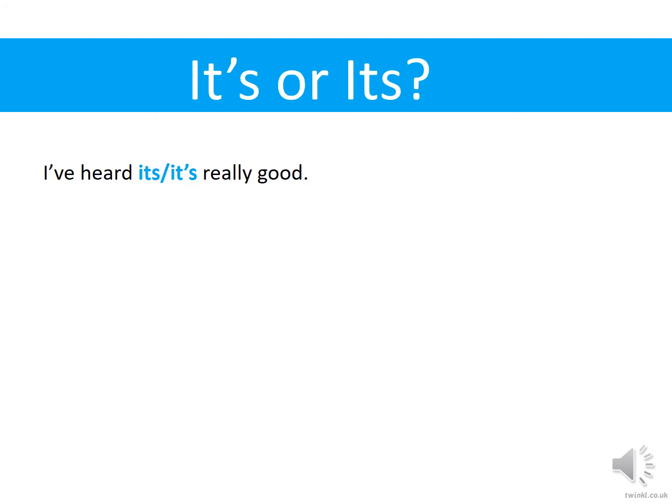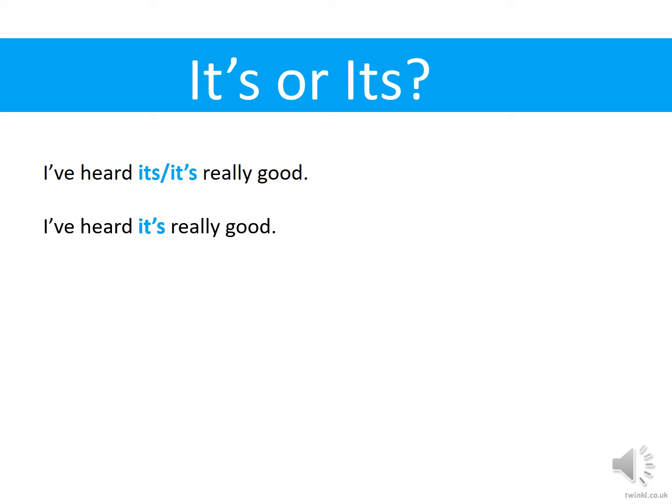It's or its — your turn to test this now. Does it need an apostrophe or doesn't it? 'I've heard it's really good.' Now is there any possessive there? Is anything being owned by anything? Not really. So: 'I've heard it's really good' — with the apostrophe.